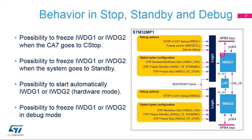The IWDG1 has some specific options linked to Secure Mode. When Secure Debug is disabled, the IWDG1 can be frozen when both Cortex-A7 cores are in debug mode. When Secure Debug is enabled, the behavior of the IWDG1 freeze depends on the WDFZCTL bit — either the IWDG1 is frozen when at least one Cortex-A7 core is in debug mode, or when both cores are in debug mode.